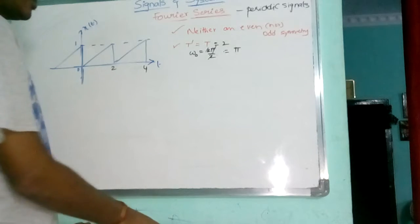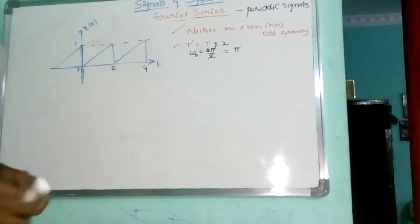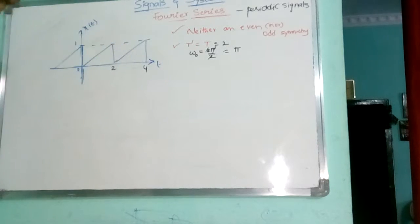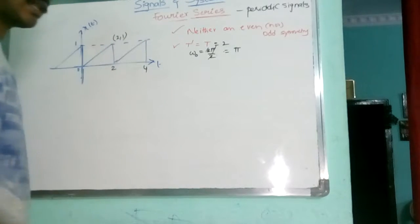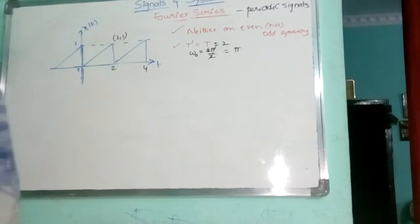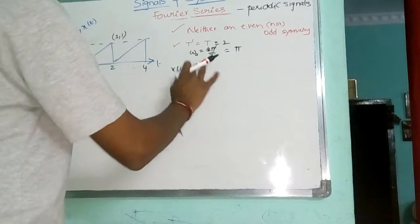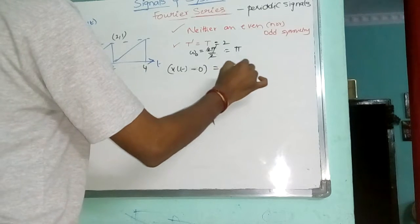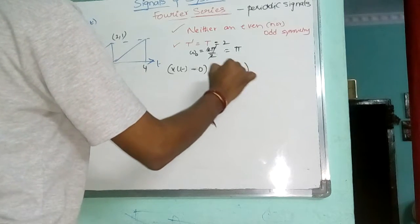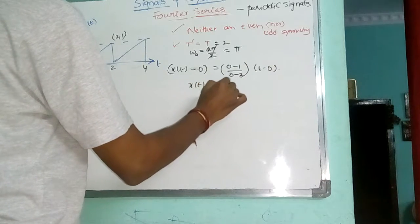After getting the time period, after getting the frequency, next is going for the average value. First, as I said already, it is a ramp signal. So first thing we need to do is calculate the signal. So x of T is defined as: x of T minus 0 equals x1 y1, so y2 minus y1 by x2 minus x1 into T minus 0. That means x of T is given by 1 by 2 of T.